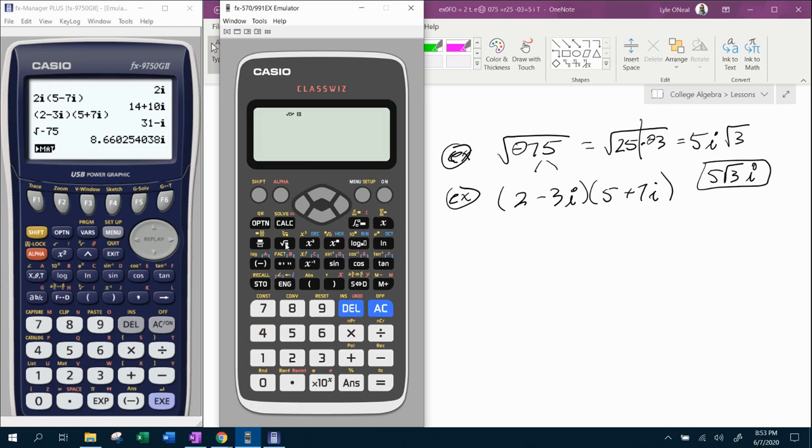On this calculator, if you do square root of negative 75, math error. So, what I need to do here is I need to go to menu, complex. I need to select complex and then try it. Negative 75, look at that,